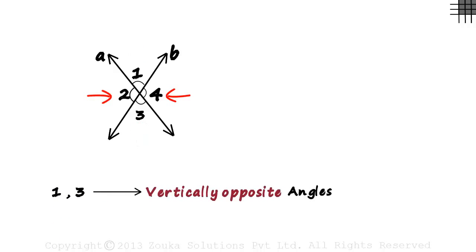Angles 2 and 4 are also opposite each other and are also equal. This pair of angles as well are called vertically opposite angles.